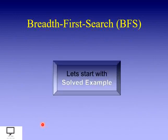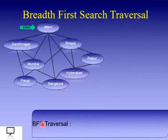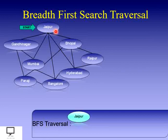Let's start with the breadth first search traversal with a solved example. I am explaining BFS traversal with an algorithm and a solved example. So if this is the graph, and suppose we want to start with Jaipur, what will be the breadth first search traversal?